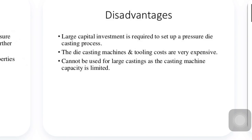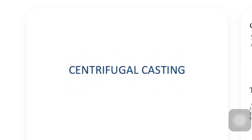Disadvantages: a large capital investment is required to set up a pressure die casting process. The die casting machine and its tooling costs are very expensive. It cannot be used for large castings, as the casting machine capacity is limited.